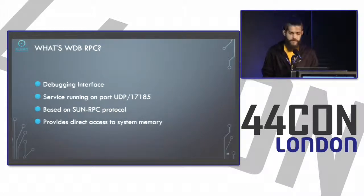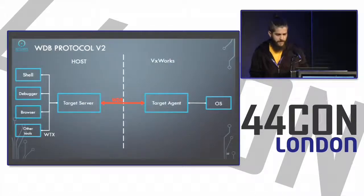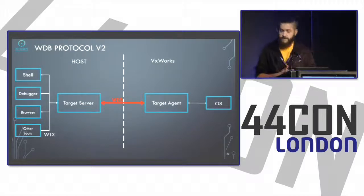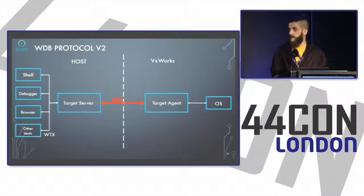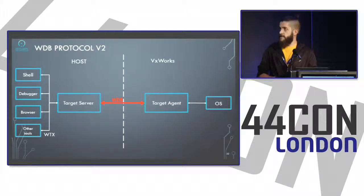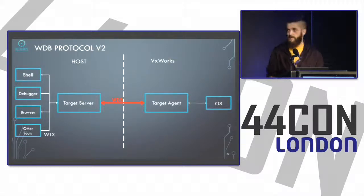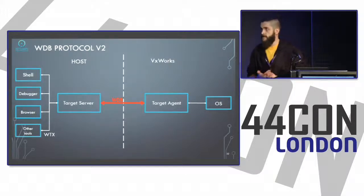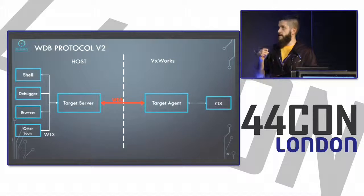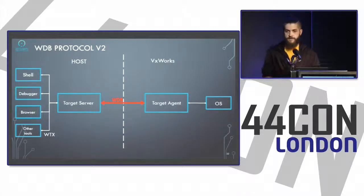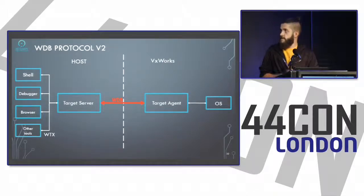This protocol is based on the SunRPC protocol. On the host side you have the target server, which communicates with the VxWorks target agent using WDB messages. This communication can happen over different transport layers: RPC, a pipe, a serial port, or a custom implementation — as long as both the target server and target agent know how to use that transport layer.